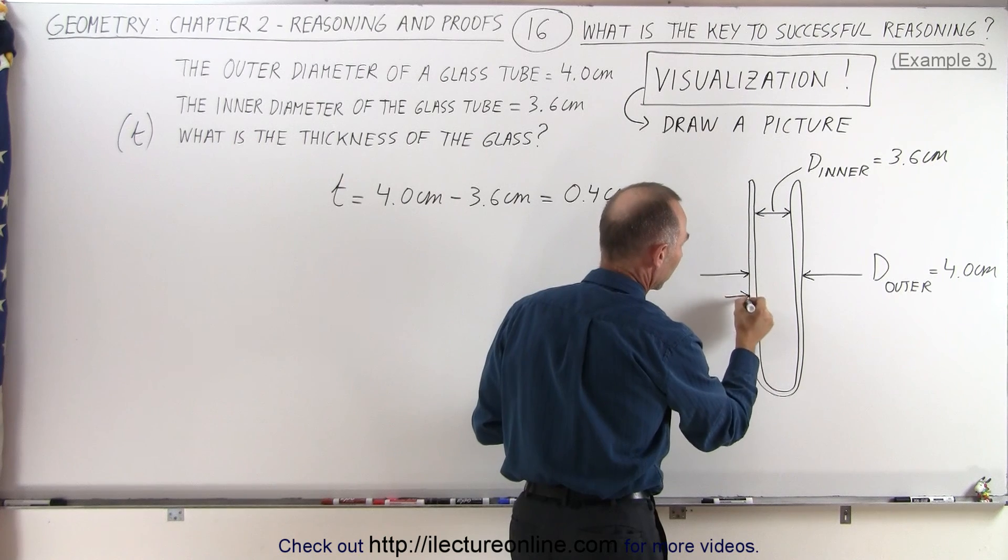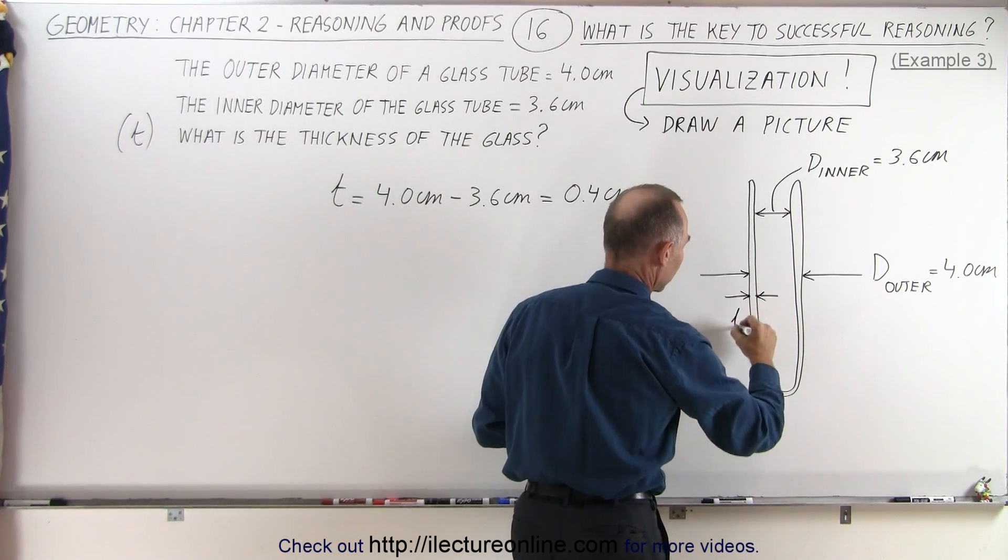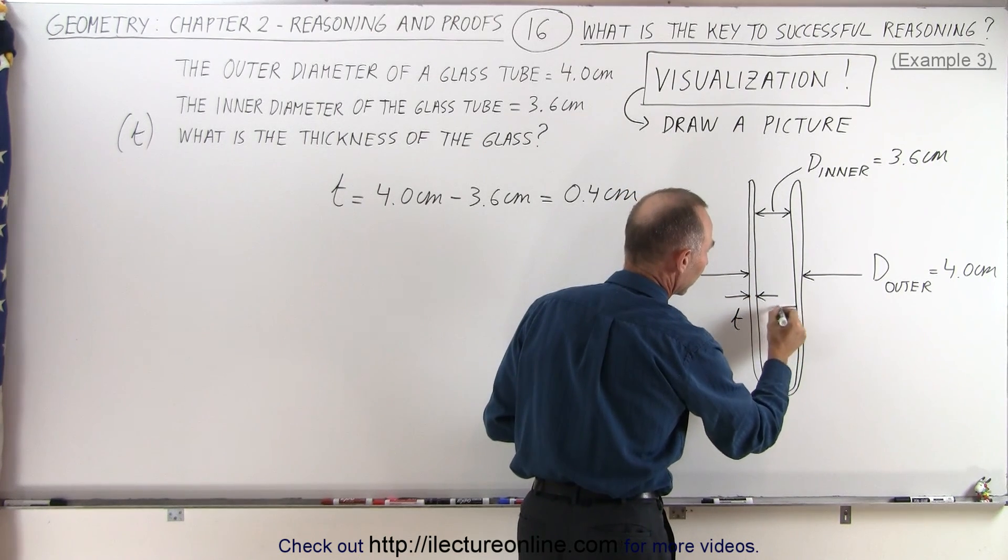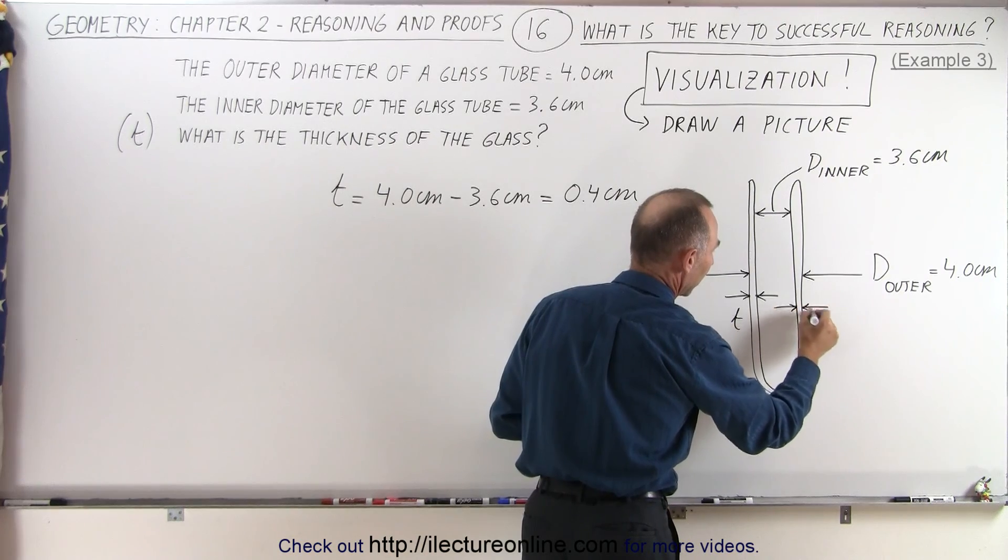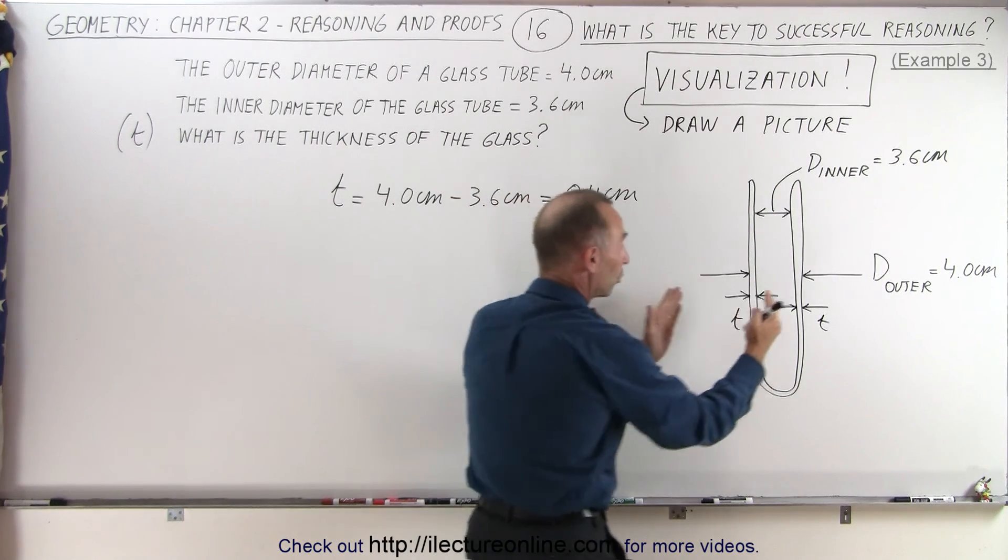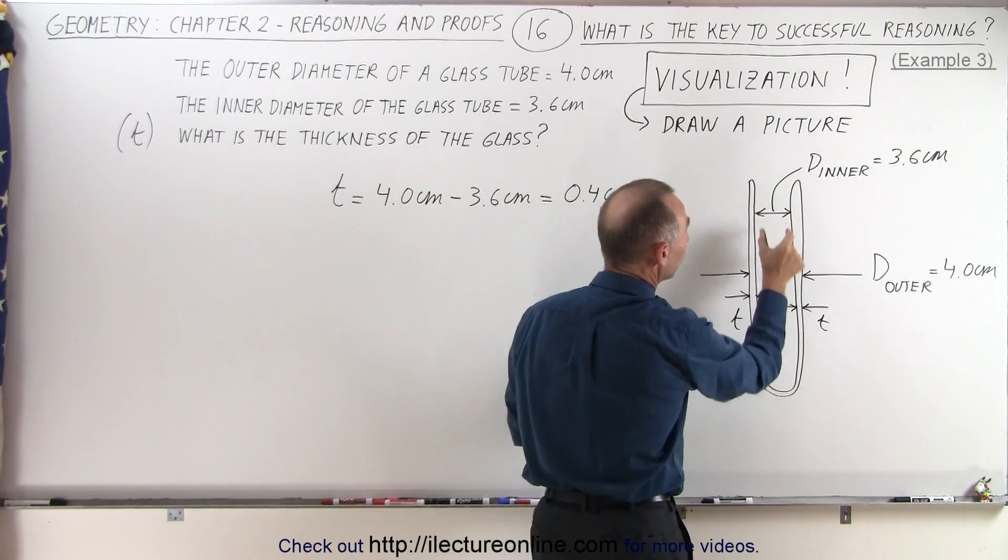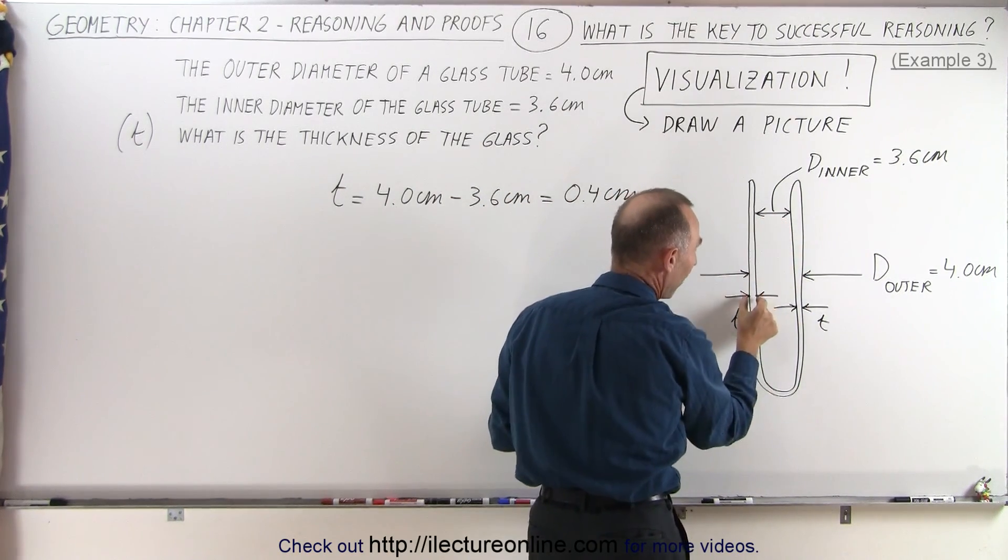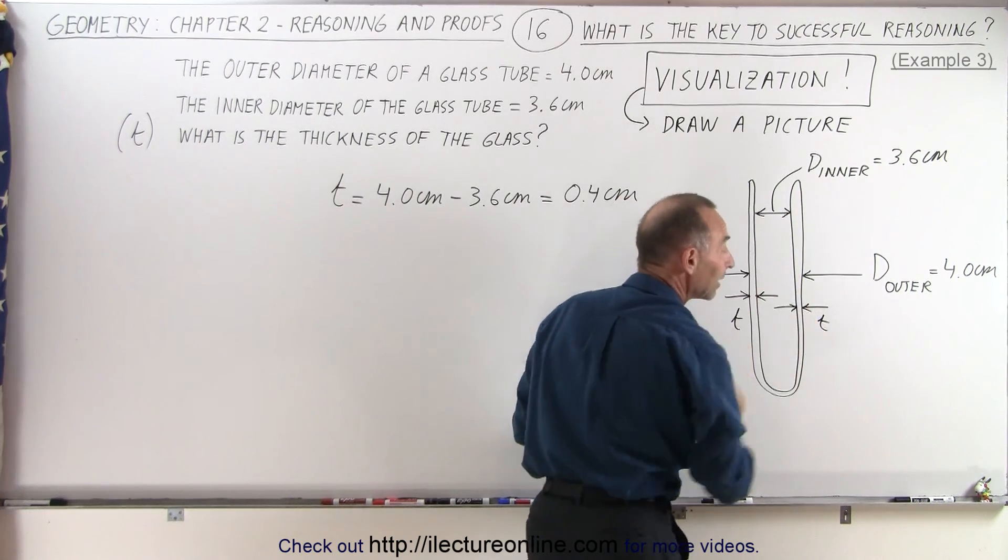So, here, from there to there, that is the thickness of the glass, but we also have the thickness on the other side. And then, when we have a visual picture of that, you can then see that the total outer diameter includes the inner diameter and twice the thickness of the glass.